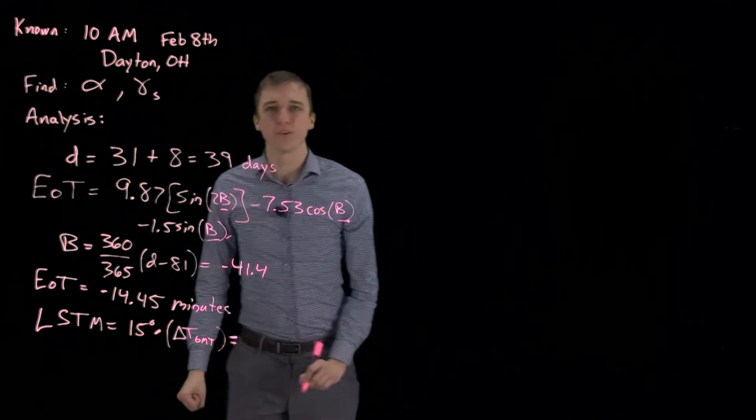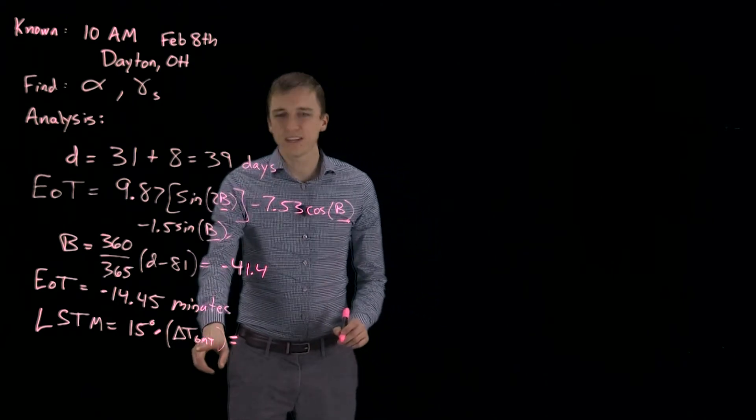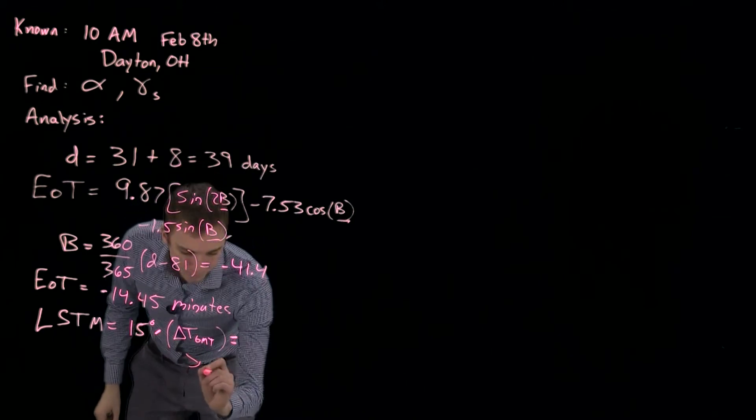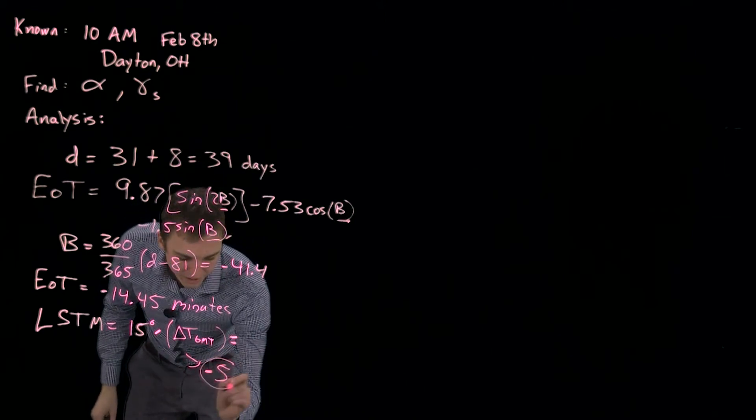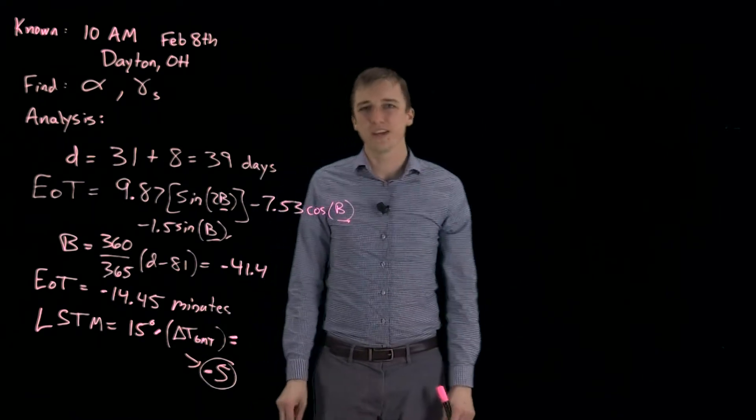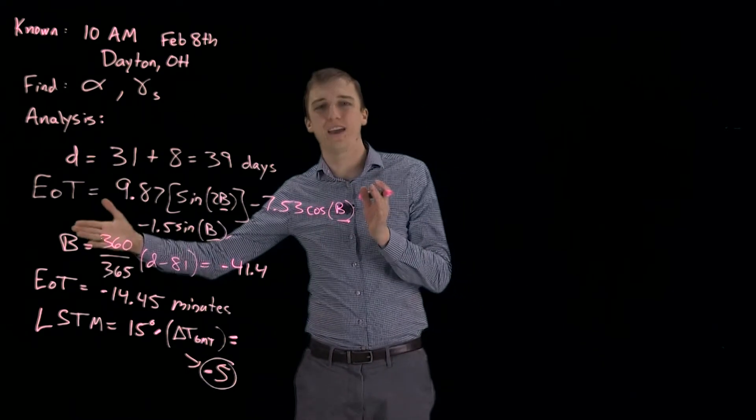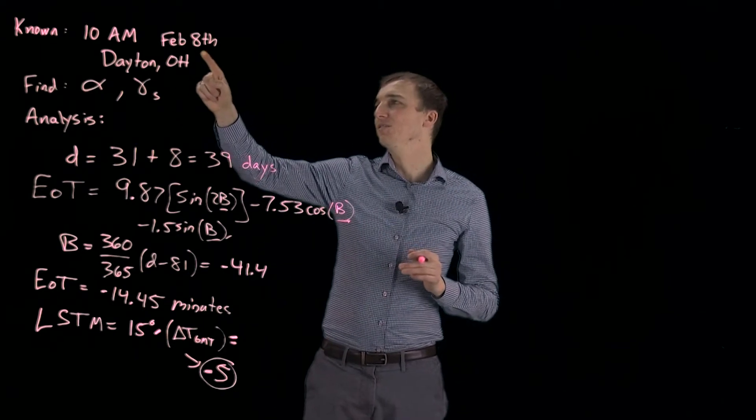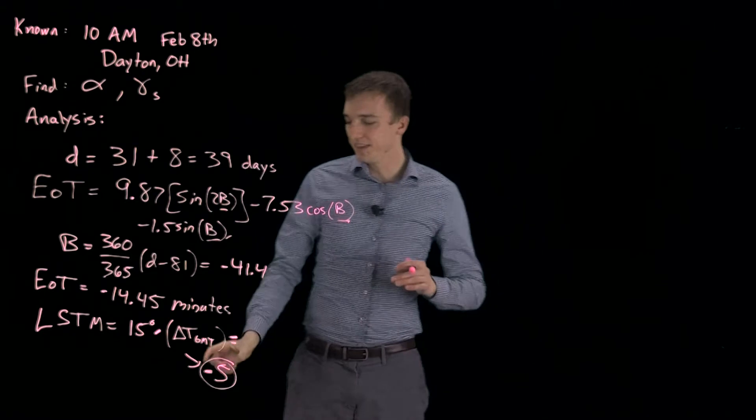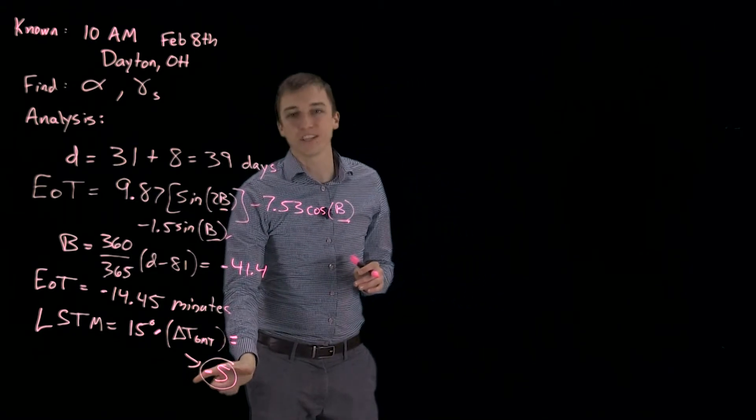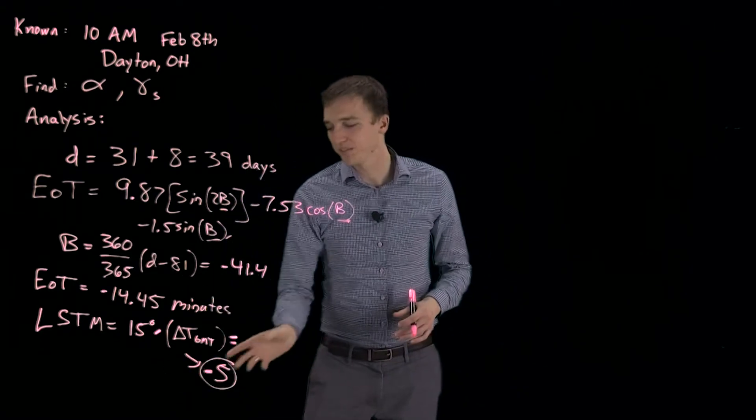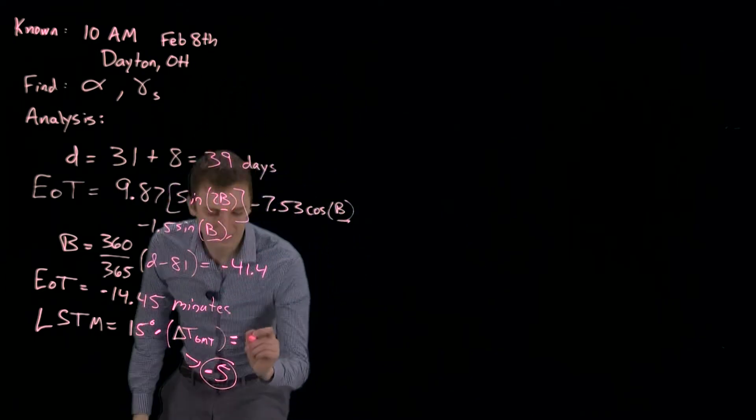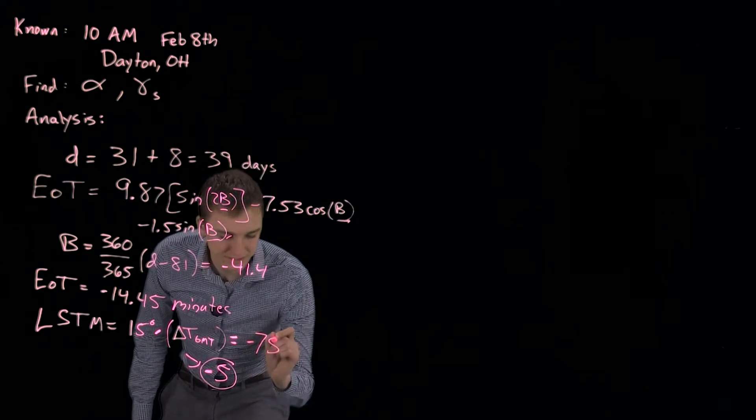And so, in the city of Dayton, in February, we are minus 5 hours away from GMT. In other words, we are 5 hours behind GMT time. Now, if this had been in the summertime, then we have daylight savings. And this, instead, would be minus 4, because we spring forward. So this is minus 4. But currently, we are standard time. We are at minus 5. We do this calculation, and we get minus 75 degrees.